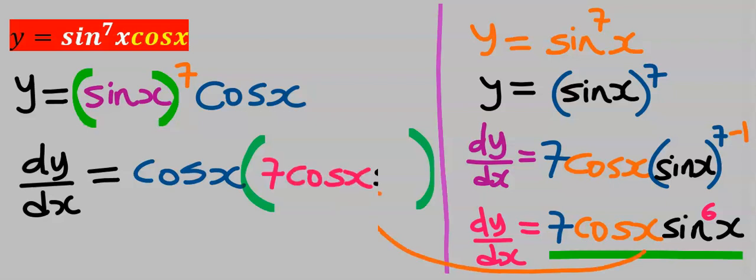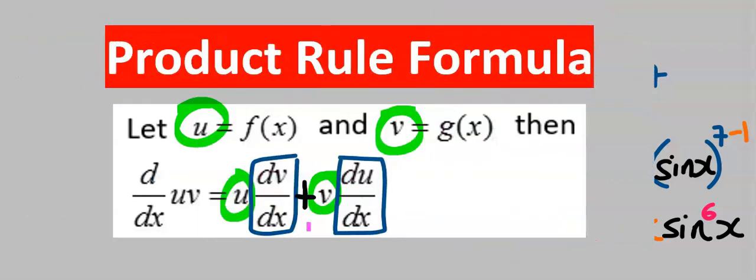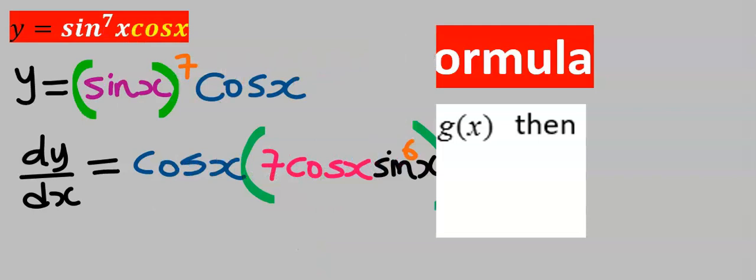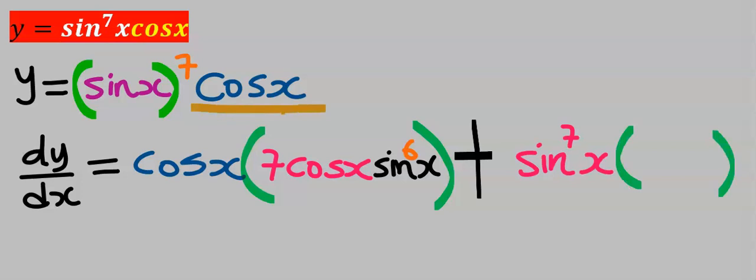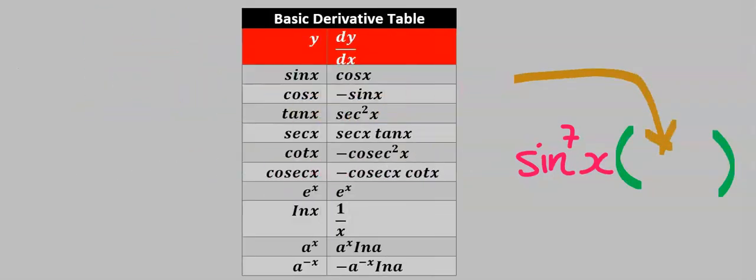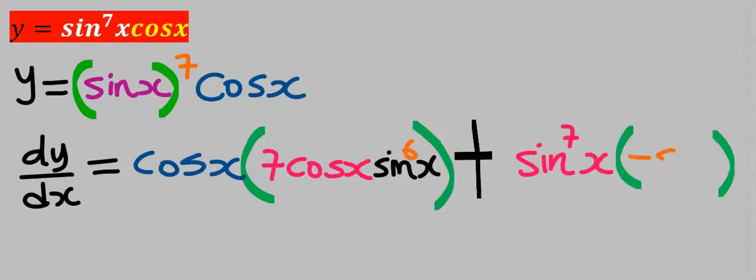Next we are going to have a plus according to product rule formula. Next we are going to keep this constant, then we're going to differentiate cos x and our answer will come in here. From the basic derivative table when we differentiate cos x you're going to get minus sine x, hence I'm going to have minus sine x.